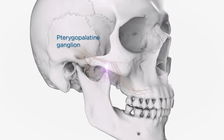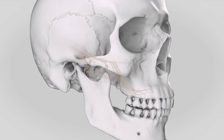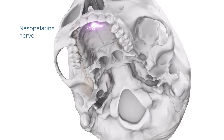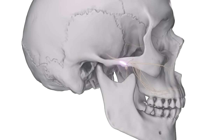The short pterygopalatine nerve trunks descend vertically to course through the pterygopalatine ganglion. Branches of the pterygopalatine nerve emanating from the ganglion distribute sensory fibers to the mid-face, including the orbital nerves and posterior nasal nerves which innervate the ethmoidal and sphenoidal sinuses, periosteum of the orbit, nasal turbinates, and posterior nasal septum. The nasopalatine nerve passes downward and forward on the nasal septum, enters the incisive canal, and reaches the oral cavity via the incisive foramen to provide sensation to the palatal mucosa of the premaxilla. A pharyngeal branch also exits the ganglion posteriorly to serve portions of the sphenoidal sinus and mucosa posterior to the auditory tube.